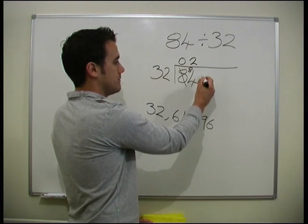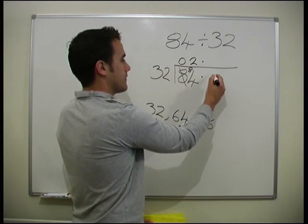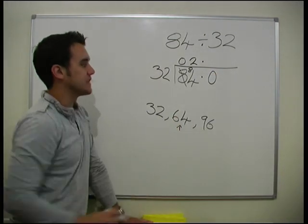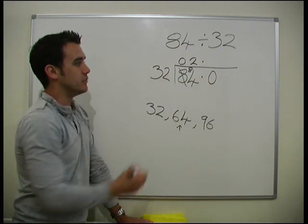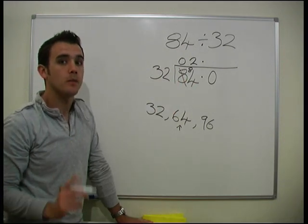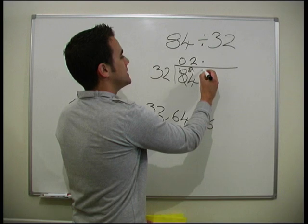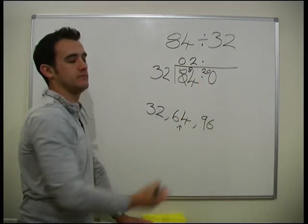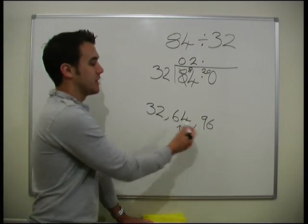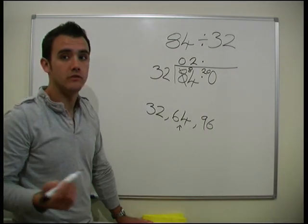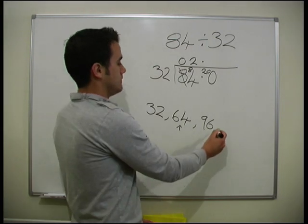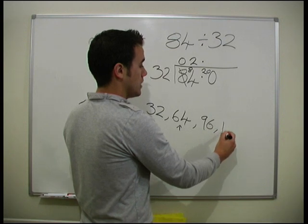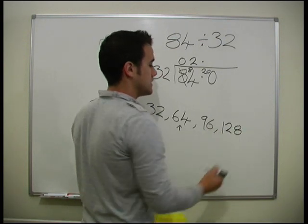Now we've got to bring our decimal point into play again, and we put a 0 here. How many have we got left over? We got to 64 and we wanted to get to 84, so we've got 20 left over. We write 20 in here, so now we've got 200. So now we'll do how many 32s get into 200 — we're going to need to continue this on until we get to 200.